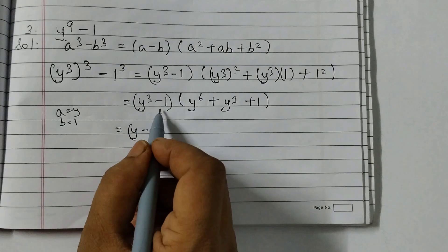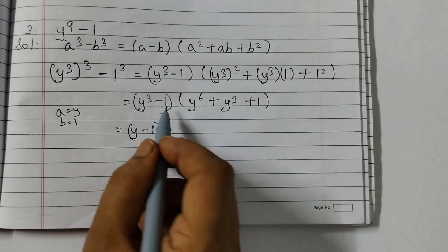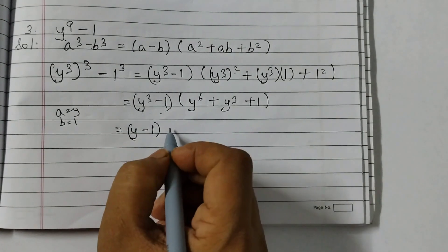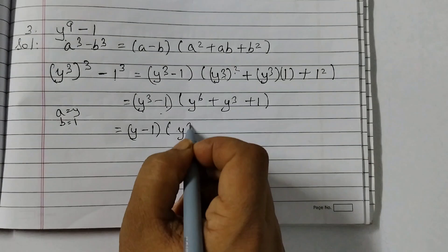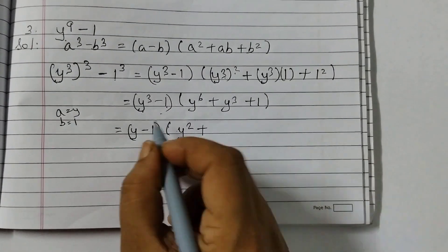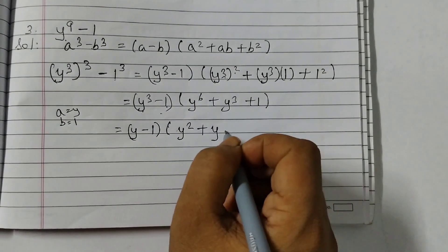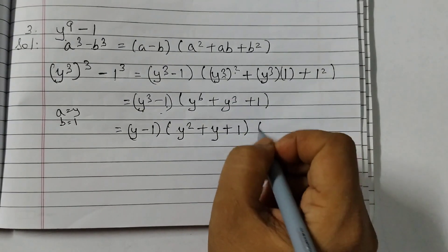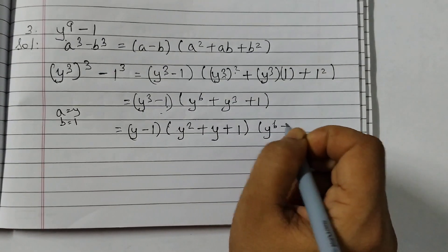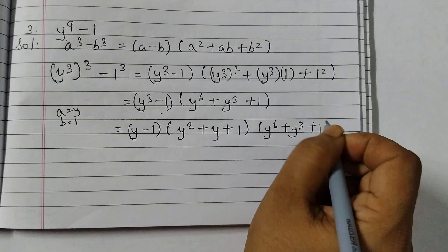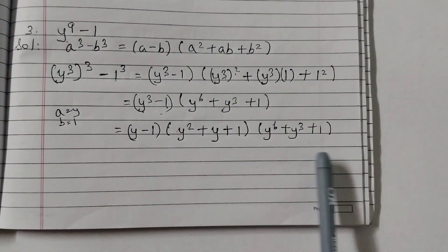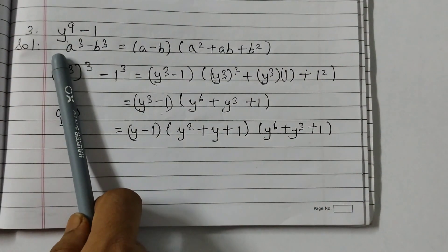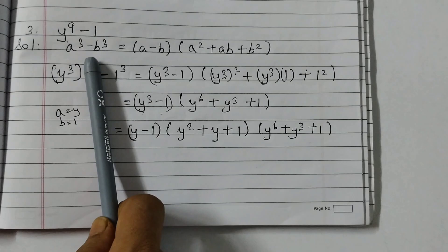So Y minus 1 into Y squared plus Y into 1 is Y plus 1. And then just bring down this: Y to the power 6 plus Y cubed plus 1. So these are the factors of this given polynomial Y to the power 9 minus 1.